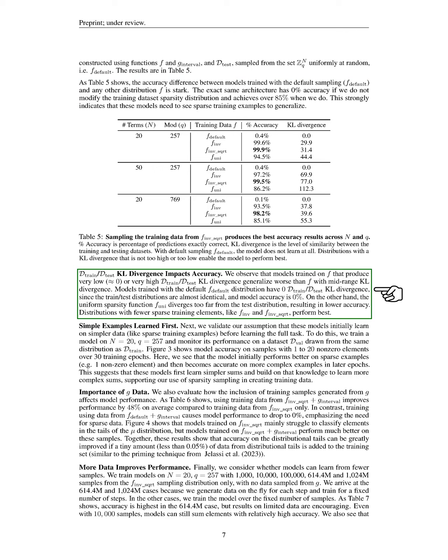Next, we observe that models trained on distributions that produce very low or very high Kolbach-Leibler divergence perform poorly. For instance, models trained with the default distribution have identical training and testing distributions, resulting in 0% accuracy. In contrast, a uniform sparsity function diverges too much from the test distribution, leading to lower accuracy. Distributions with fewer sparse training elements, like certain inverse functions, yield the best performance.